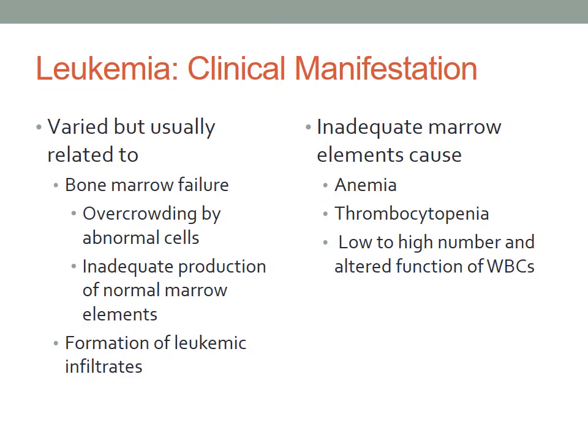The clinical manifestations of leukemia relate to problems caused by bone marrow failure and the formation of leukemic infiltrates. The congestion of blasts in the bone marrow causes lymph glands in the neck, axillary or groin, and upper abdominal quadrants to become swollen and painful. Risk for infections increases because these leukemic white blood cells do not mature, resulting in a decrease in the number of mature infection-fighting cells or neutrophils. This condition is also known as neutropenia.